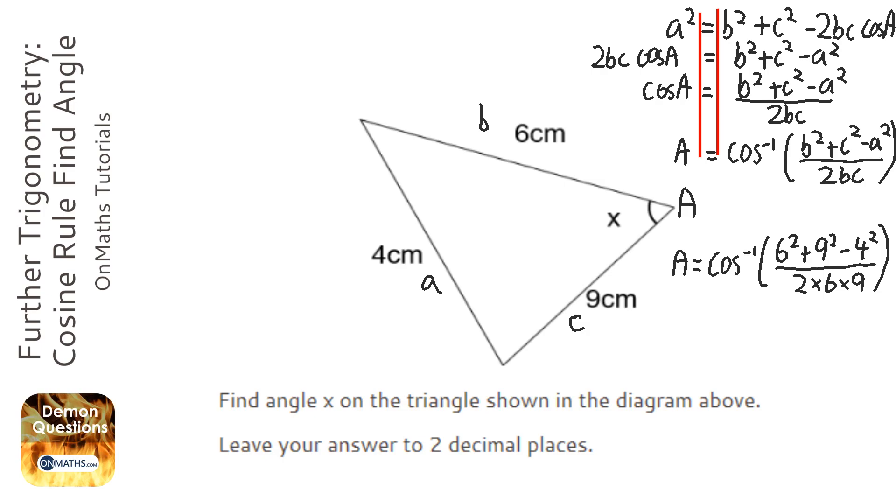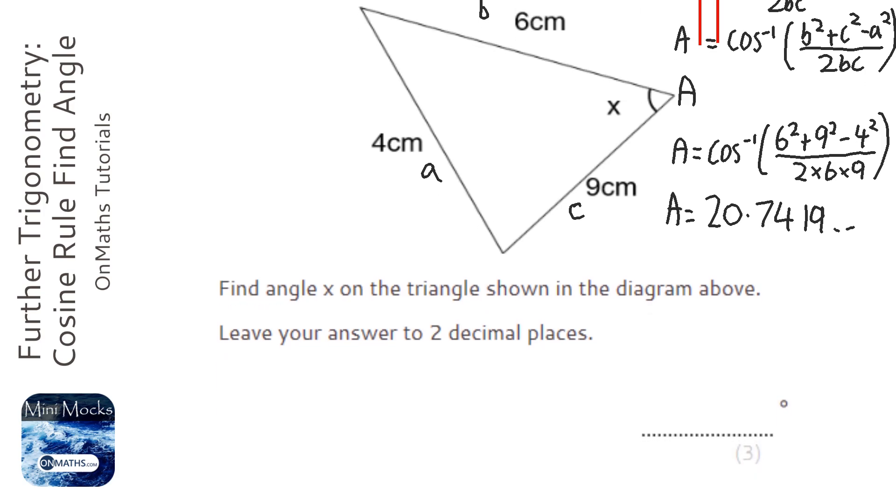And the answer it gives me is 20.7419. And it wants it to two decimal places, so it would be 20.74.